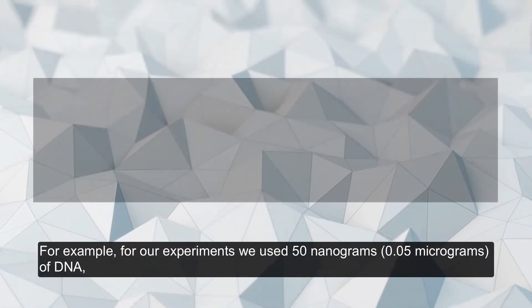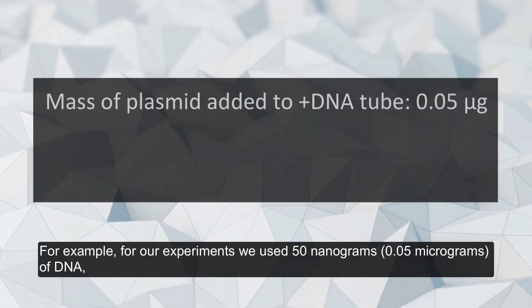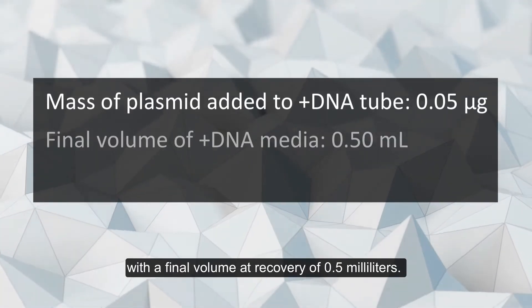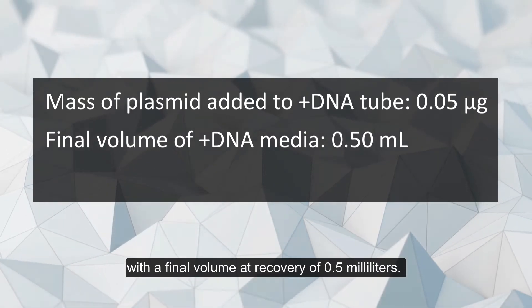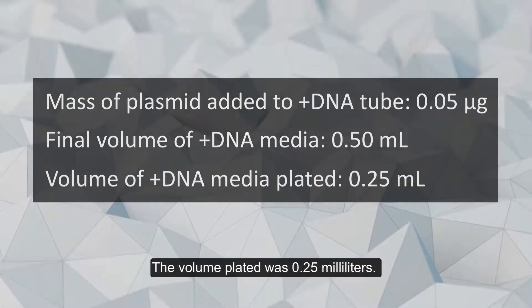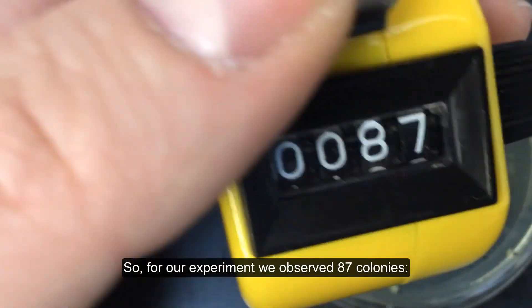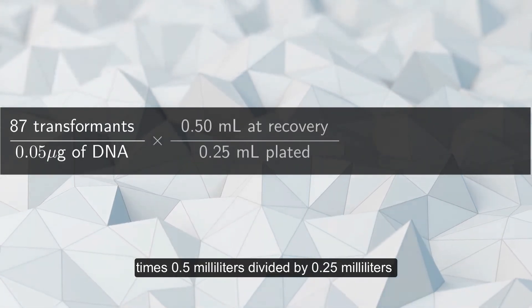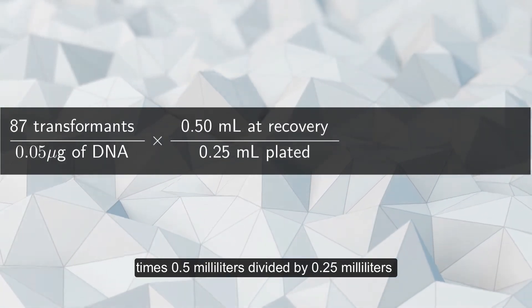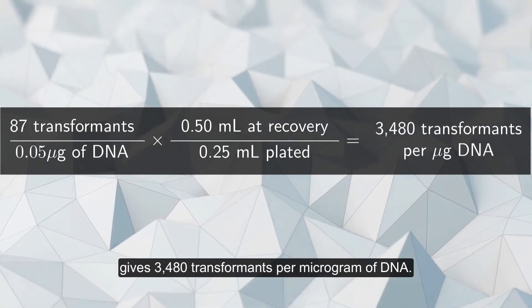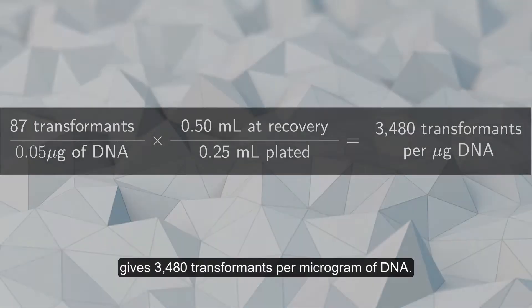For our experiments, we used 50 nanograms or 0.05 micrograms of DNA with a final volume at recovery of 0.5 milliliters. The volume plated was 0.25 milliliters, and we observed 87 colonies. So: 87 transformants divided by 0.05 micrograms, times 0.5 milliliters divided by 0.25 milliliters, gives 3,480 transformants per microgram of DNA.